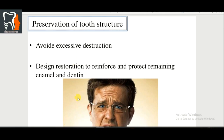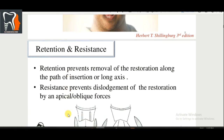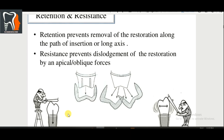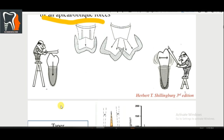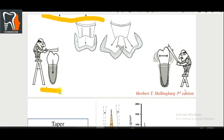Retention and resistance are concepts we have studied before. Retention is along the long axis — it prevents removal of the restoration along the path of insertion or long axis. Resistance prevents dislodgement of the restoration by apical and oblique forces. Looking at the diagram, you can see how vertical forces work and where the apical forces act.